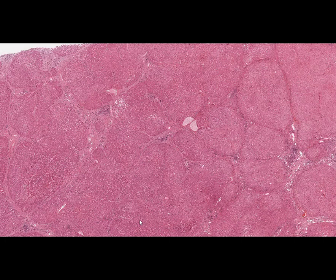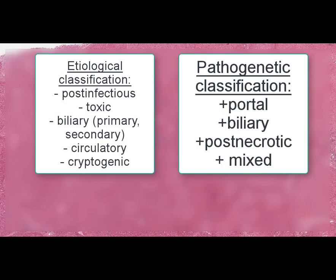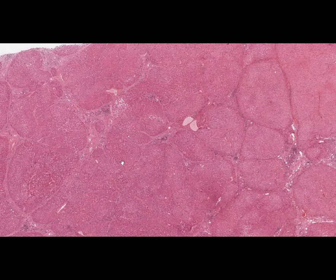Main classifications are based on etiology and pathogenesis, both reflecting peculiarities of microscopical changes in the liver. We can also use macroscopic classification. The slide shows etiological, pathogenetical, and macroscopical classifications. At low magnification, the hepatic parenchyma is presented by lobules surrounded by connective tissue septa.